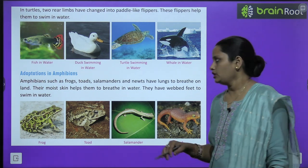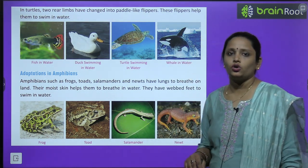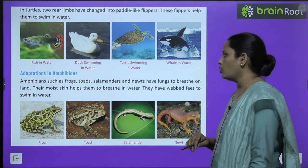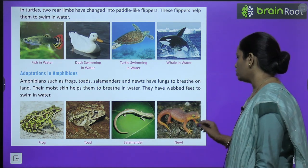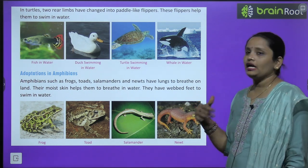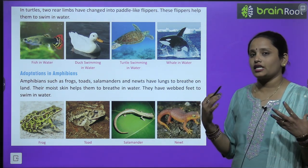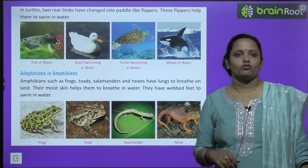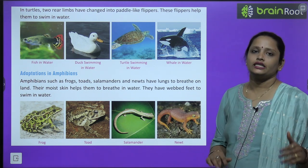Next comes adaptation in amphibians. Amphibians such as frog, toad, salamander, and newts have lungs to breathe on land. Their moist skin helps them to breathe in water. They also have webbed feet to swim in water.